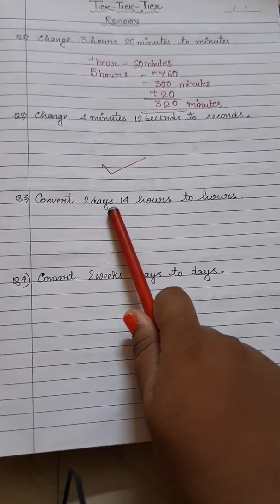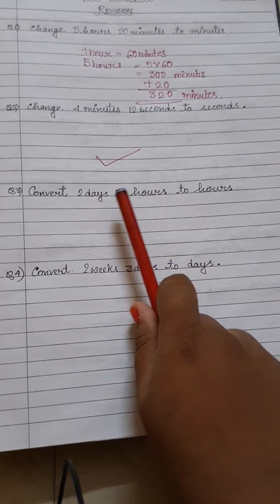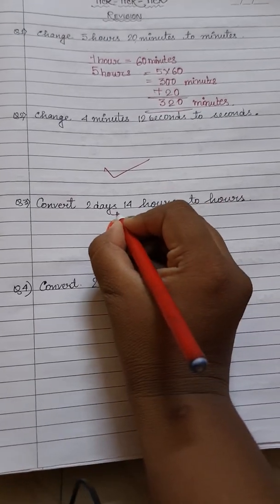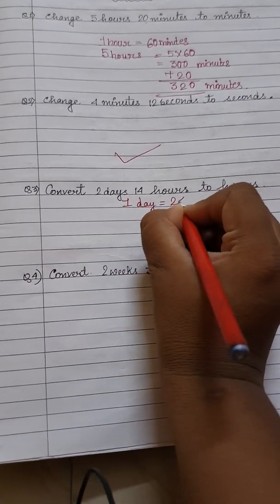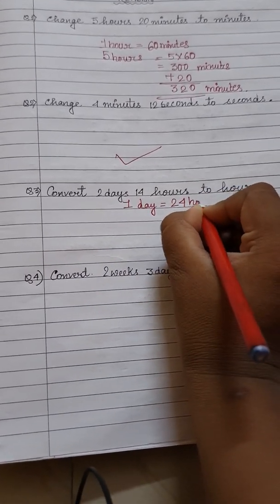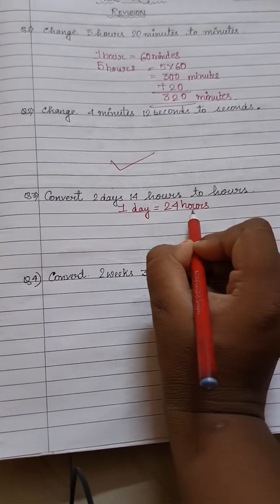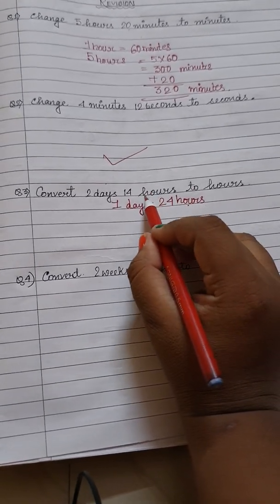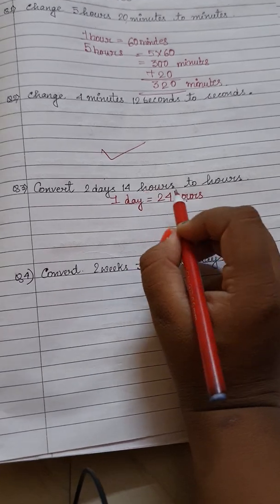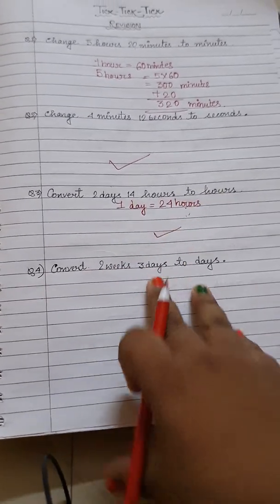Next: convert 2 days 14 hours to hours. As you know, 1 day equals 24 hours. So similarly, find how many hours 2 days will be, then add 14 hours to get the final answer. In this way you have to do this also.